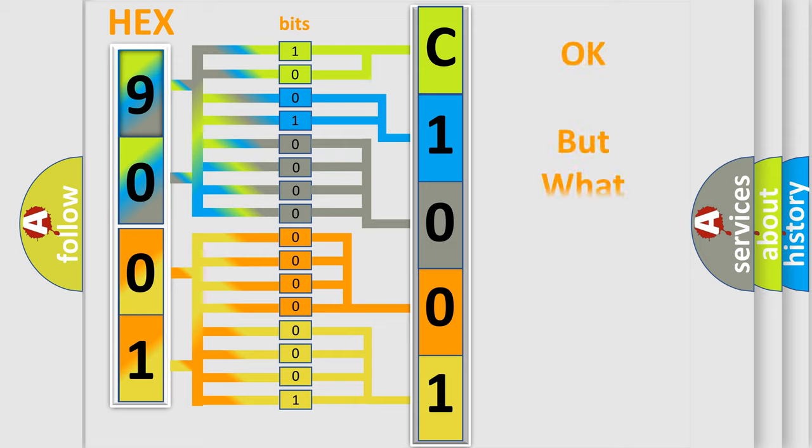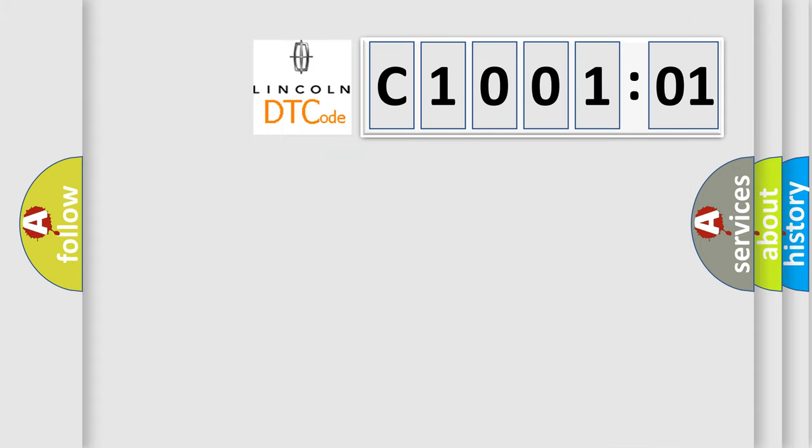The number itself does not make sense to us if we cannot assign information about what it actually expresses. So, what does the diagnostic trouble code C100101 interpret specifically for Lincoln car manufacturers?